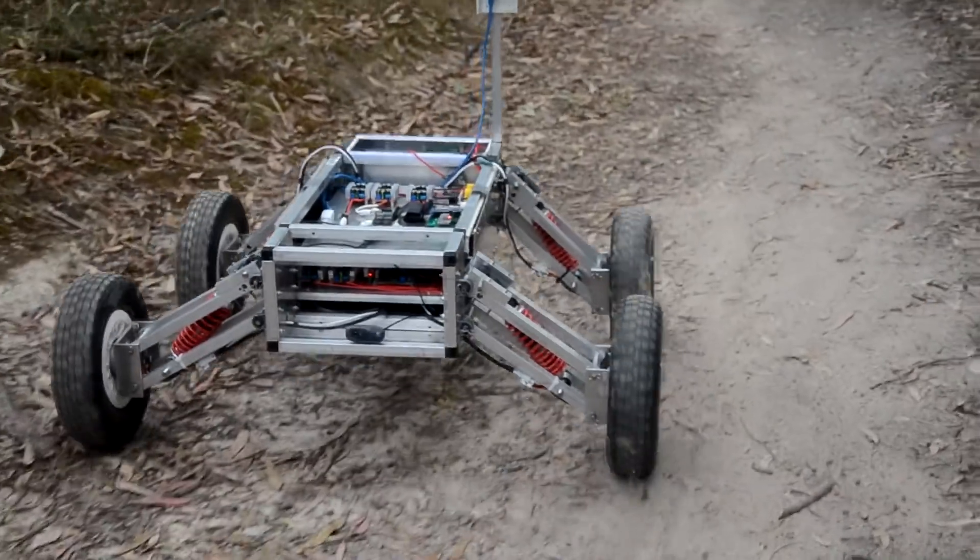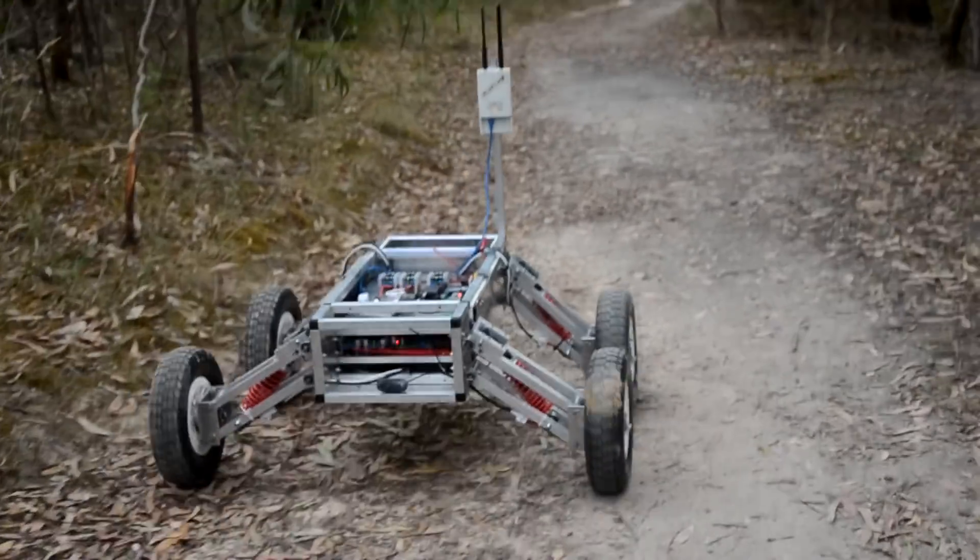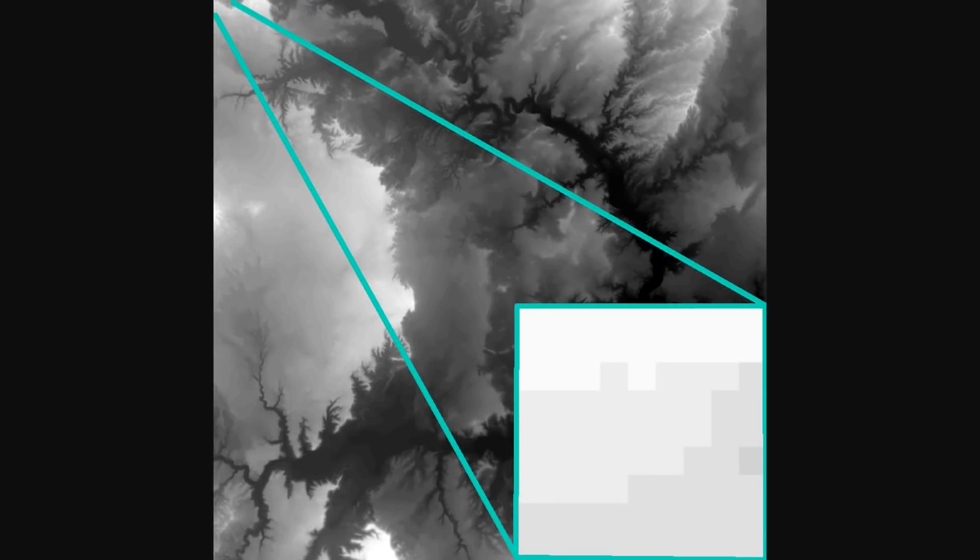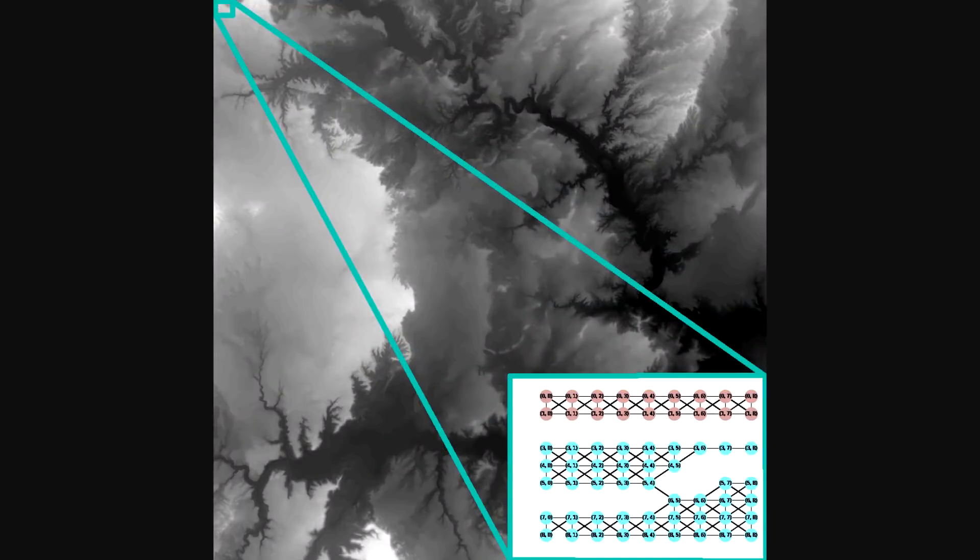Our autonomous navigation procedure is broken up into three layers. The highest level is an analysis of a pre-made height map of the area. We look at all of the GPS locations within the grid over the map.